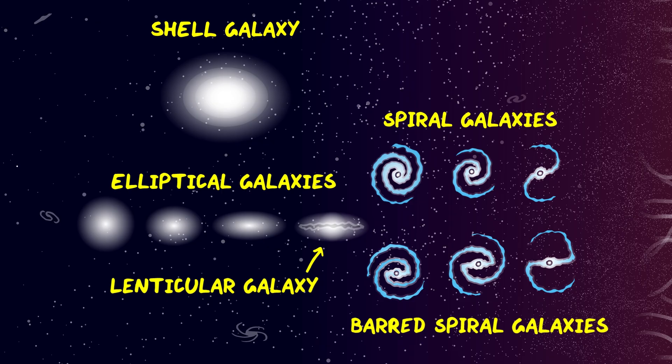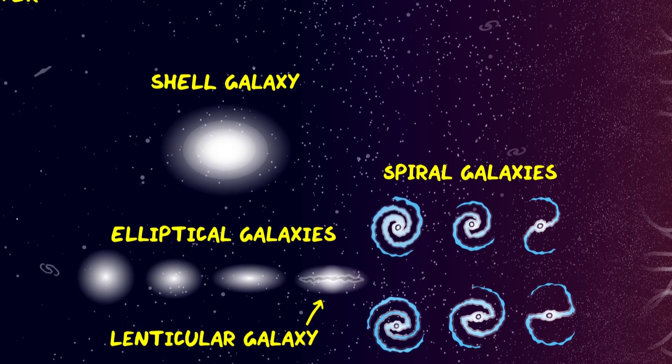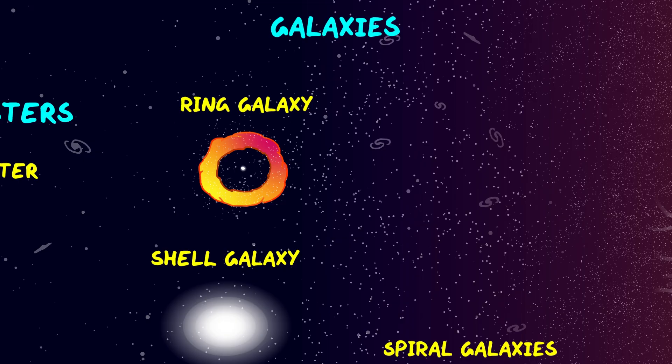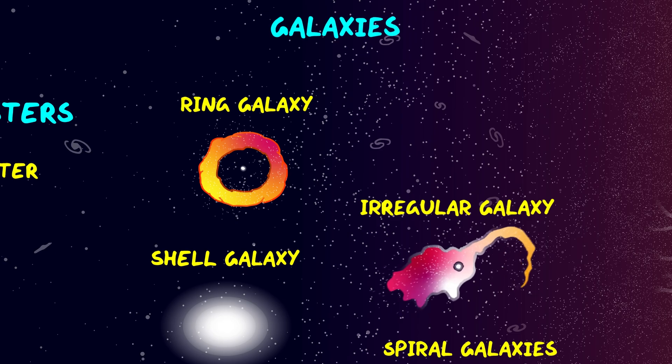Occasionally, galaxies collide and interact, and because of this some galaxies don't fit these broad categories. For example, ring galaxies have an empty core and a ring-like collection of stars around it, which may have been caused by a smaller galaxy moving through the middle of the larger one. And irregular galaxies are those that have a strange shape due to some interaction in the past.